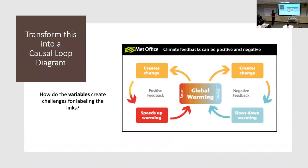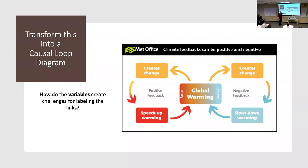Let's get some practice as a warm-up with this global warming example. This is from the Met Office, which is like the Weather Channel in the UK. They're trying to communicate that there are positive feedbacks and negative feedbacks at play with global warming. They have global warming in the middle: it creates change that speeds up warming — that's a positive feedback — and change that slows down warming — that's a negative feedback — and they say this one is faster and this one is slower.